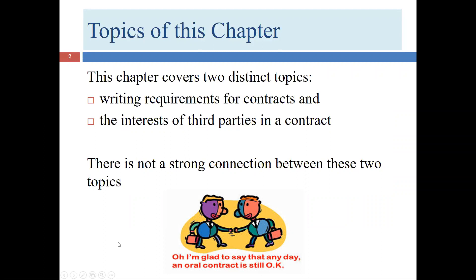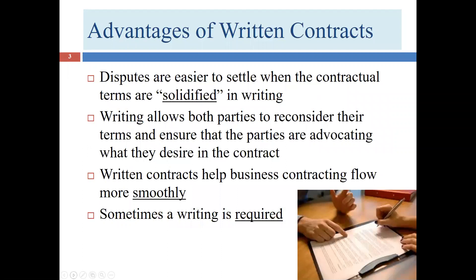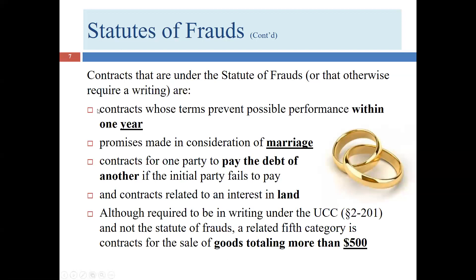Just a little review of what we covered in Lectures 1 and 2. We talked about the statute of frauds in Lecture 1, and we talked about the five categories of contracts covered by the statute of frauds. One is a contract whose terms prevent possible performance within one year. Another category is promises made in consideration of marriage, particularly prenuptial agreements.